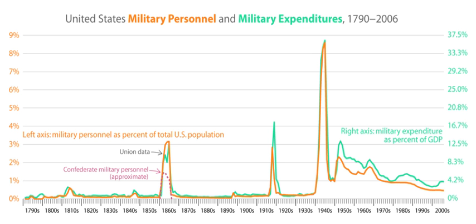The Persian Gulf War was a conflict between Iraq and a coalition force of 34 nations led by the United States. The lead-up to the war began with the Iraqi invasion of Kuwait in August 1990, which was met with immediate economic sanctions by the United Nations against Iraq. The coalition commenced hostilities in January 1991, resulting in a decisive victory for the U.S.-led coalition forces, which drove Iraqi forces out of Kuwait with minimal coalition deaths. Despite the low death toll, over 180,000 U.S. veterans would later be classified as permanently disabled, according to the U.S. Department of Veterans Affairs.